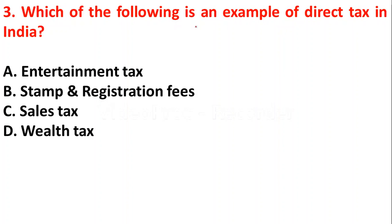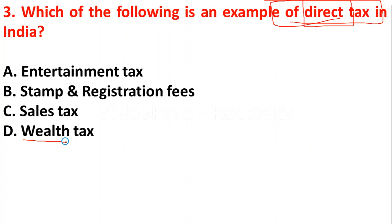Question three: which of the following is an example of direct tax in India? Option A: entertainment tax, option B: stamp and registration fees, option C: sales tax, option D: wealth tax. Direct tax means the incidence and impact of the tax fall on the same person — we cannot shift it. Wealth tax is a direct tax, so option D is the right answer.